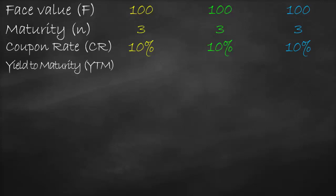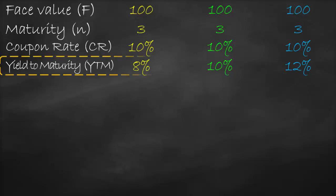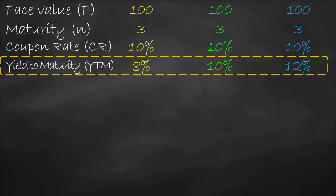The yield to maturity will be different across the scenarios. In the first scenario it will be 8%, in the second scenario it will be higher at 10%, and in the third scenario it will be even higher at 12%. So all three scenarios are identical except the yield to maturity, which will change.